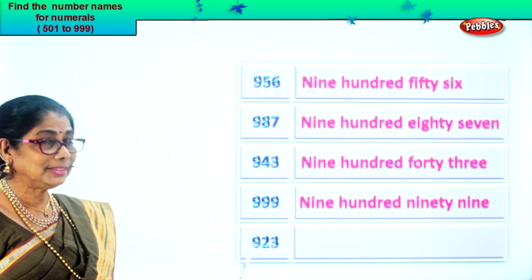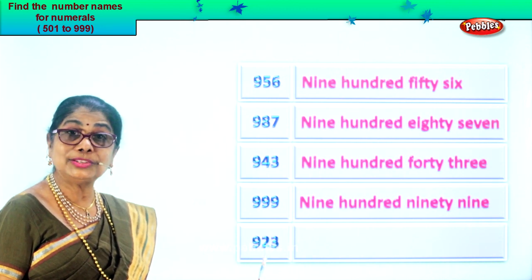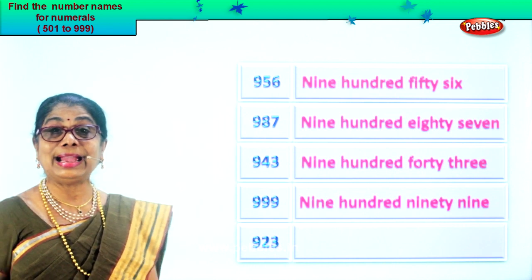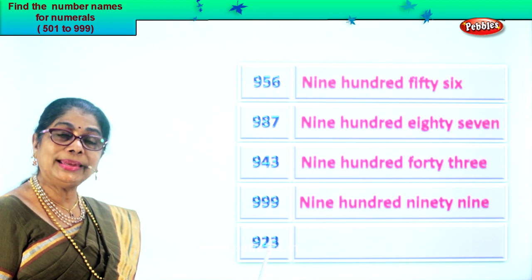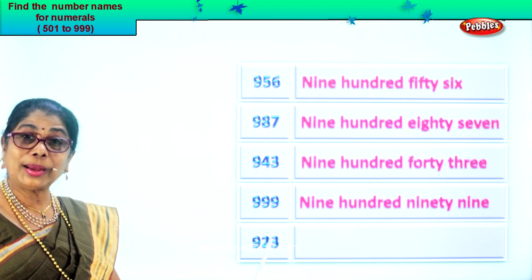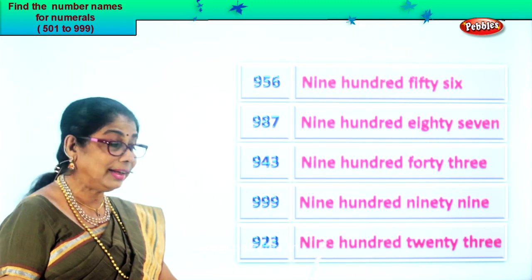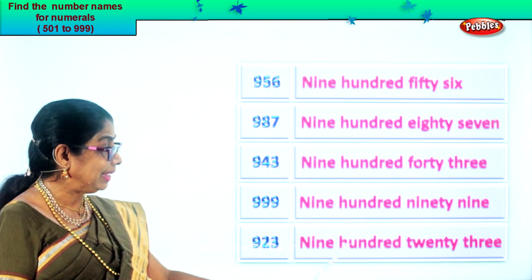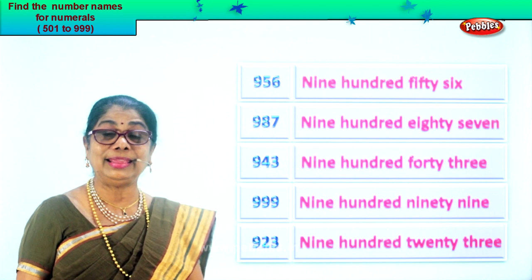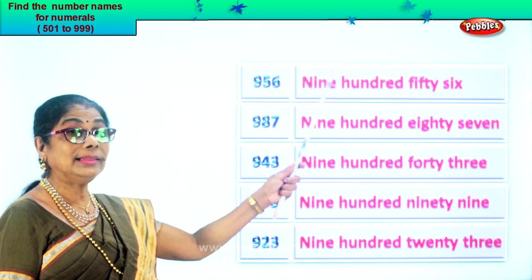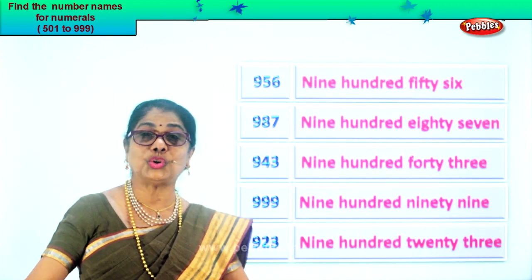Let's look at the last numeral here. We have nine, two, three. Three in the ones place, two in the tens and nine in the hundreds place. Let's read: nine hundred twenty-three. So first we write nine, then we write hundred, then we write twenty-three. Nine hundred twenty-three. We learnt to write the number name for all these numerals correctly. I hope you enjoyed the exercise.